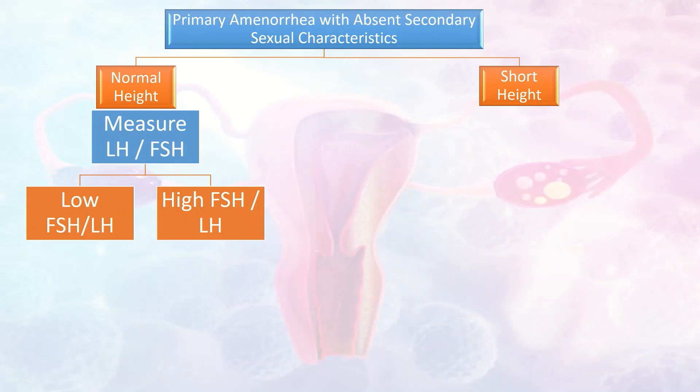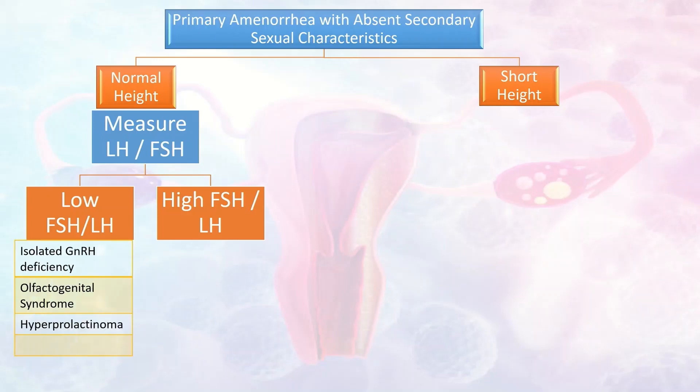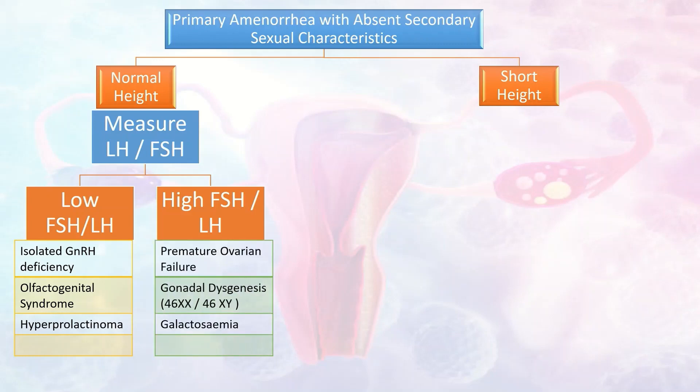In case of low FSH and LH levels, the differential diagnosis includes isolated GnRH deficiency, olfactogenital syndrome, and hyperprolactinemia. When FSH and LH levels are high, the differential diagnosis includes premature ovarian failure, gonadal dysgenesis with karyotypes 46XX and 46XY, and galactosemia.